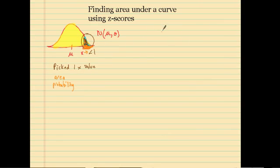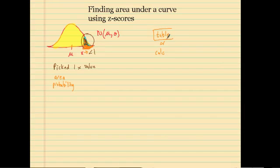There are two ways to do this: we could find it using a table or a calculator. For this video I'm going to be using the table. Usually these tables are in the back of the book, and it's called a z-table, because there are z-scores.